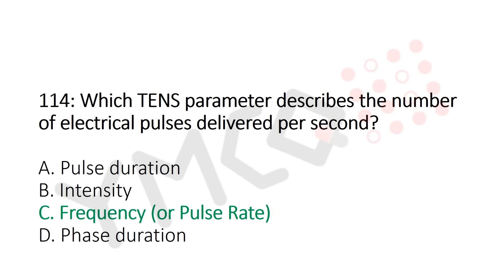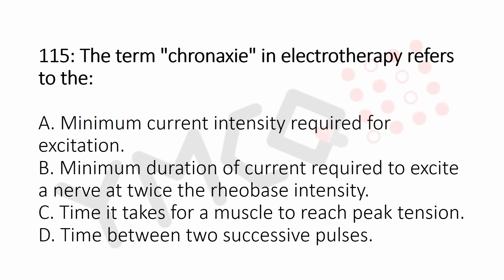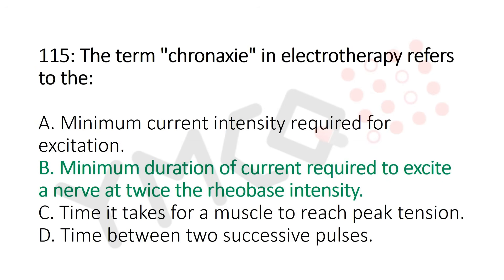Question number 115: The term chronaxie in electrotherapy refers to: Option A: minimum current intensity required for excitation. Option B: minimum duration of current required to excite a nerve at twice the rheobase intensity. Option C: time it takes for a muscle to reach peak tension. Option D: time between two successive pulses. And the answer is Option B: minimum duration of current required to excite a nerve at twice the rheobase intensity.